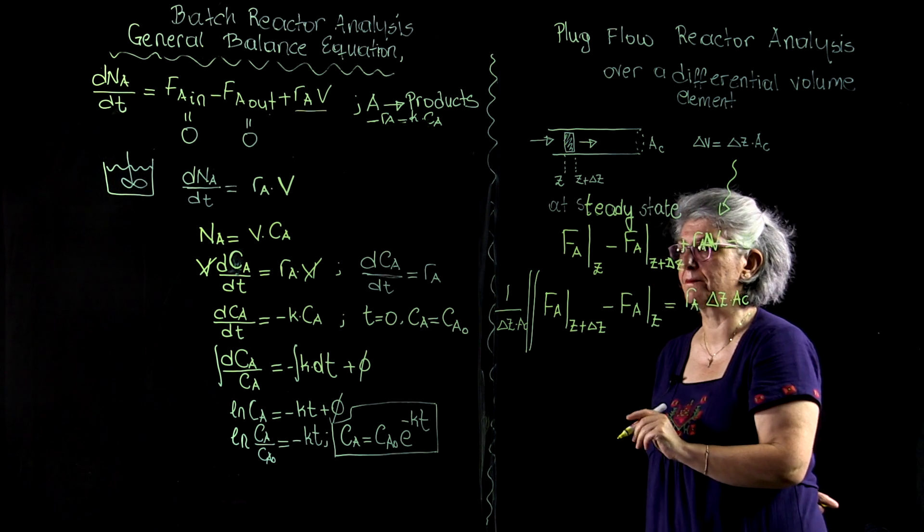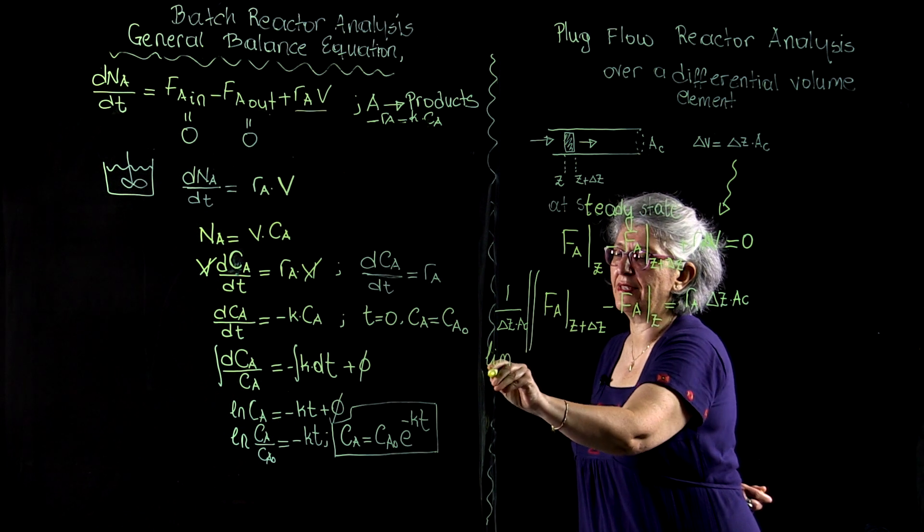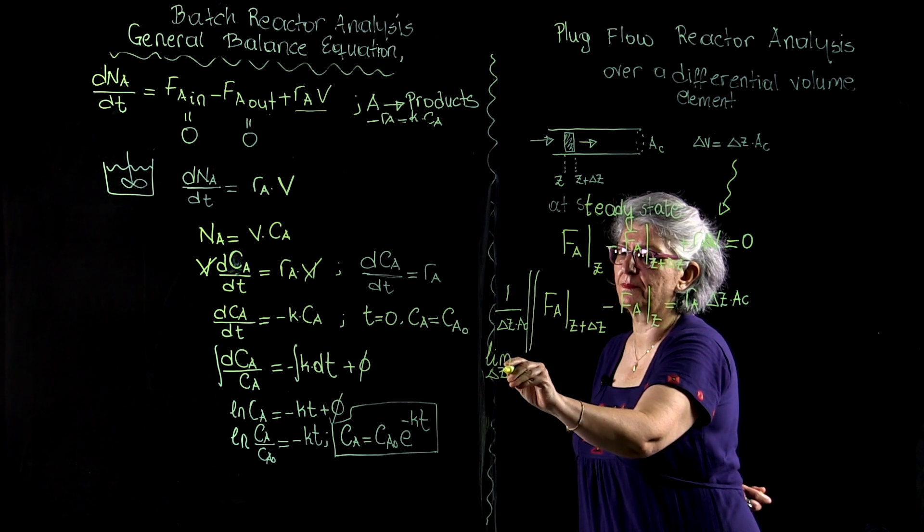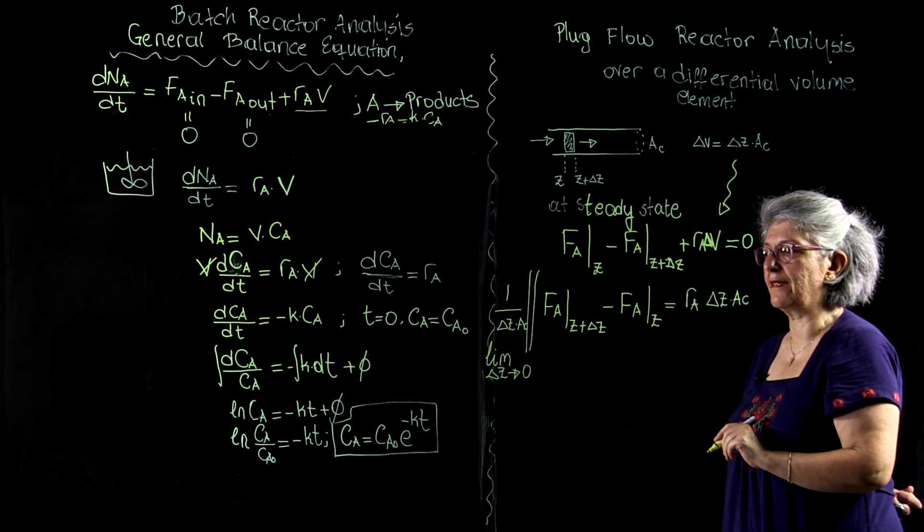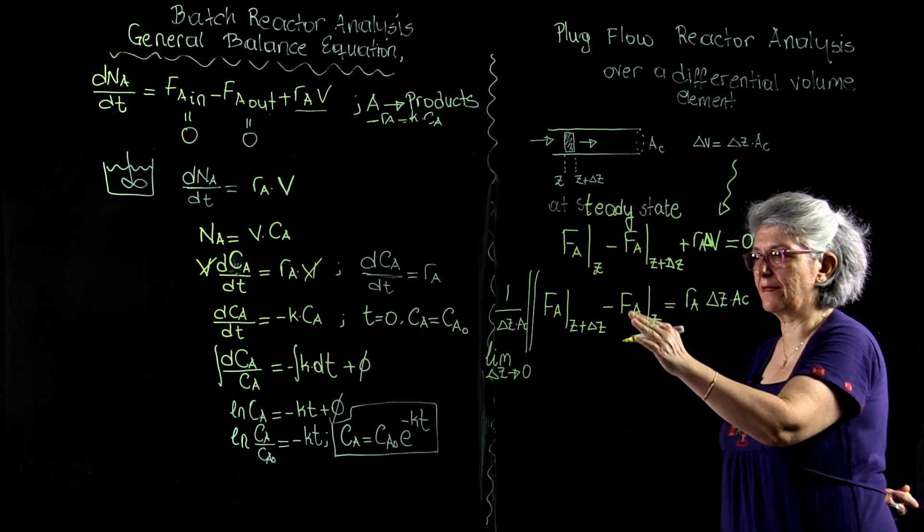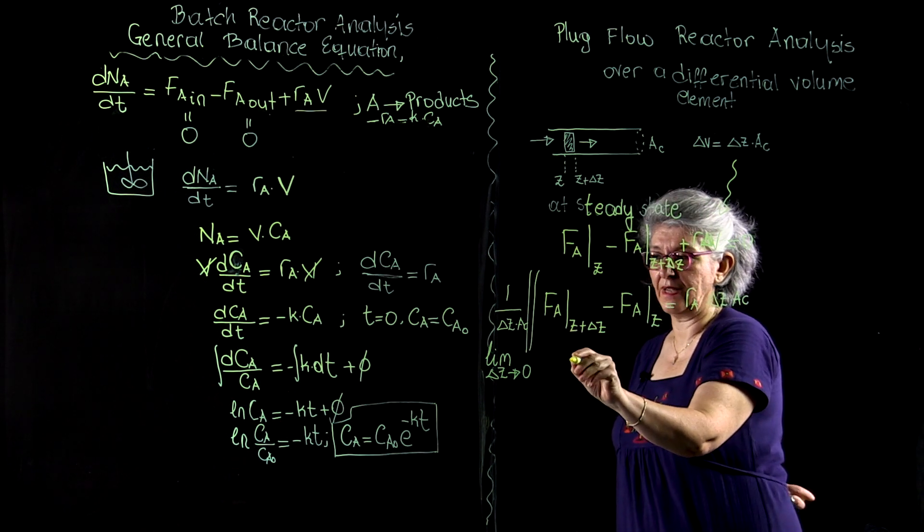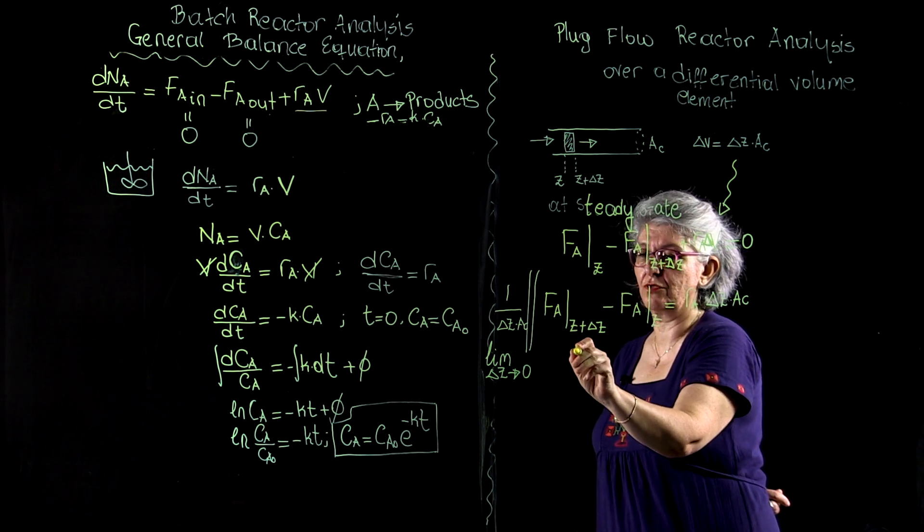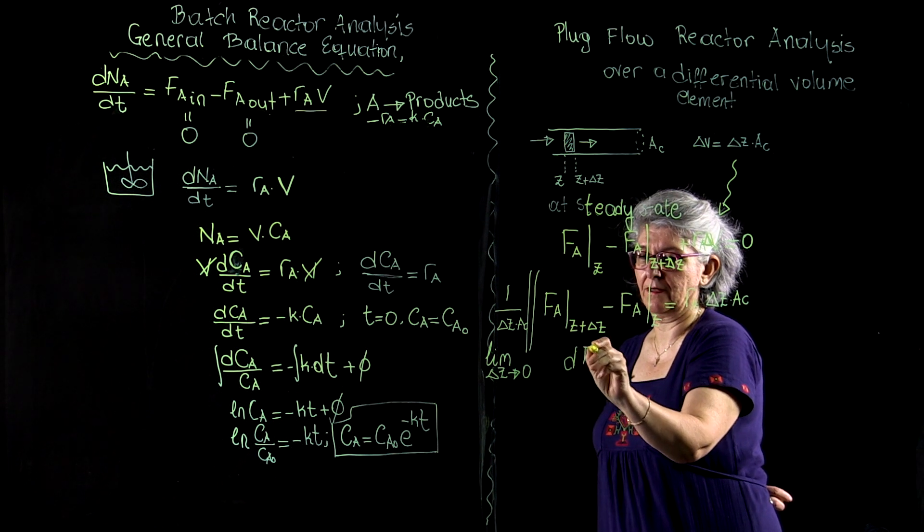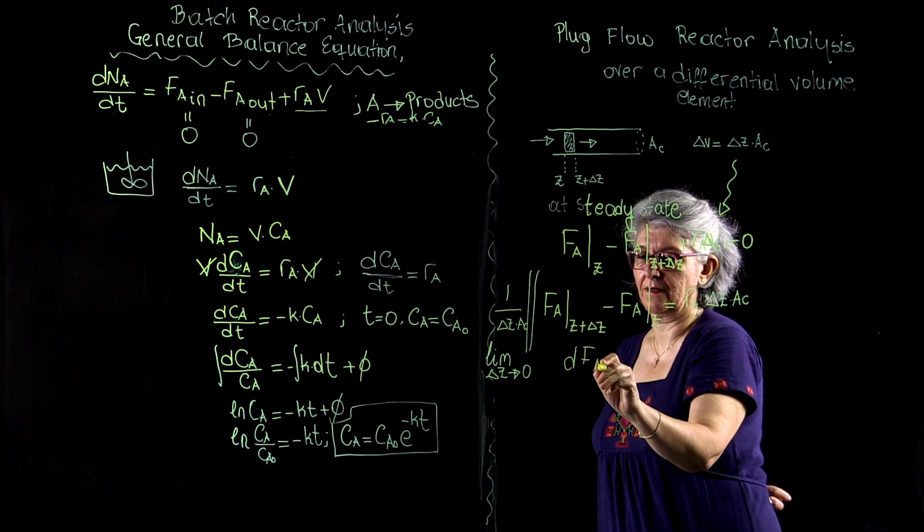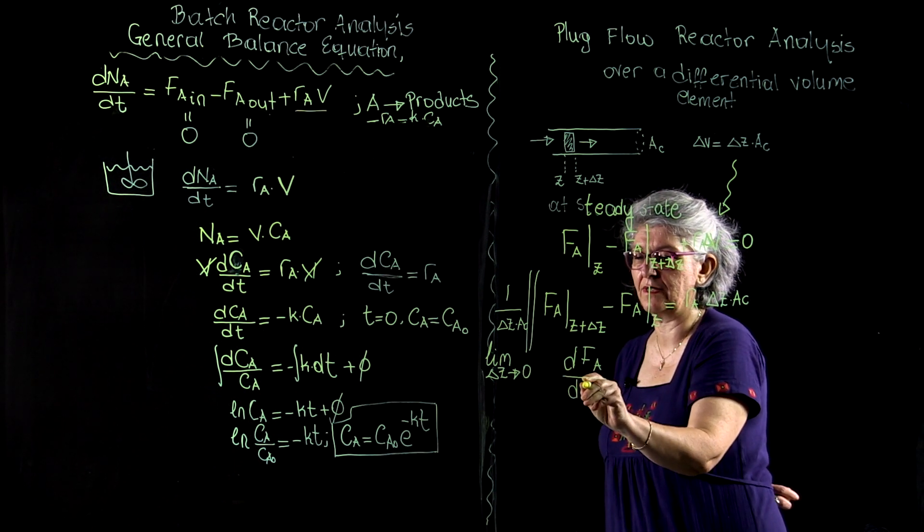I will divide both sides of this equation by one over Delta Z times a_C, or Delta V, and I will take the limit as Delta Z goes to zero.